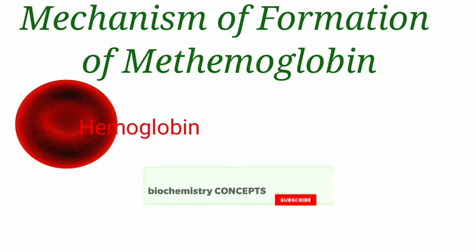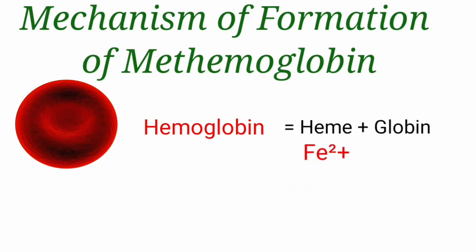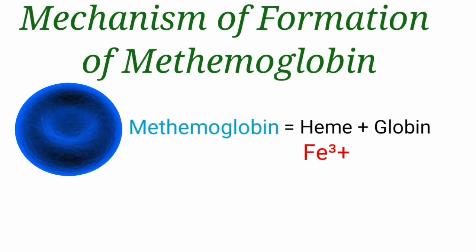Coming to the mechanism of formation of methemoglobin: when the ferrous form of iron is oxidized to the ferric form — that is, Fe2+ is oxidized to Fe3+ — it forms methemoglobin. To carry oxygen, the iron of hemoglobin should remain in the ferrous state. This methemoglobin, formed due to oxidation of iron, has poor affinity for oxygen and is unable to bind to oxygen.